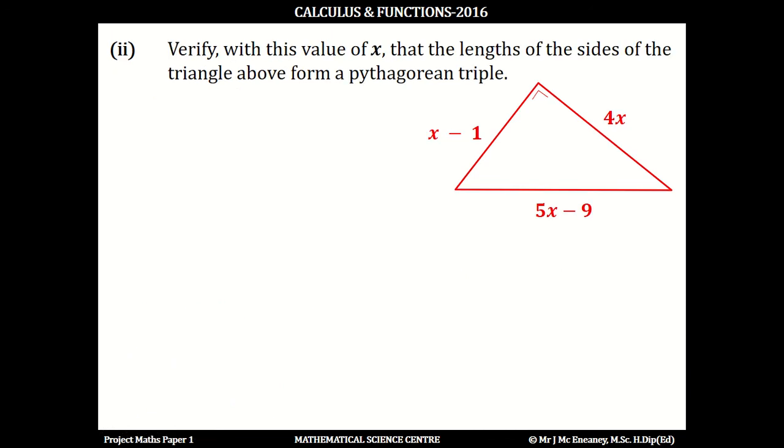Now to then verify that this value of x, the lengths of the sides of the triangle do form a Pythagorean triple. So if x is 10, this would be 10 minus 1, this side would be 9, this side would be 40, and this side would be 50 minus 9, which is 41.